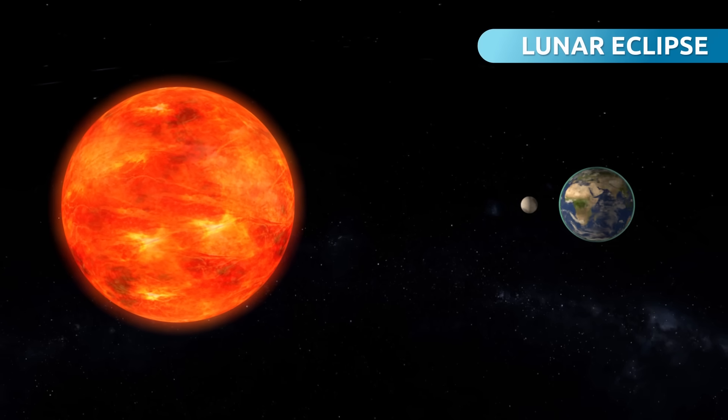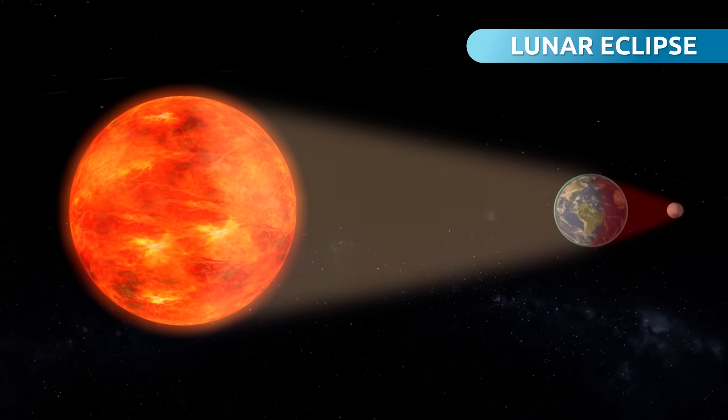During a lunar eclipse, the Earth positions itself between the Sun and the Moon, blocking sun rays from reaching the Earth.